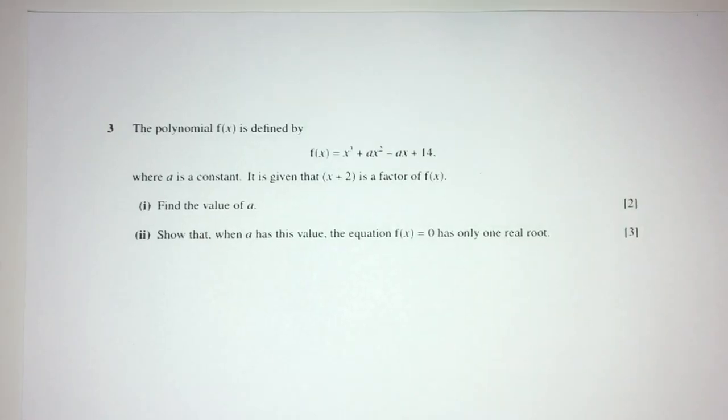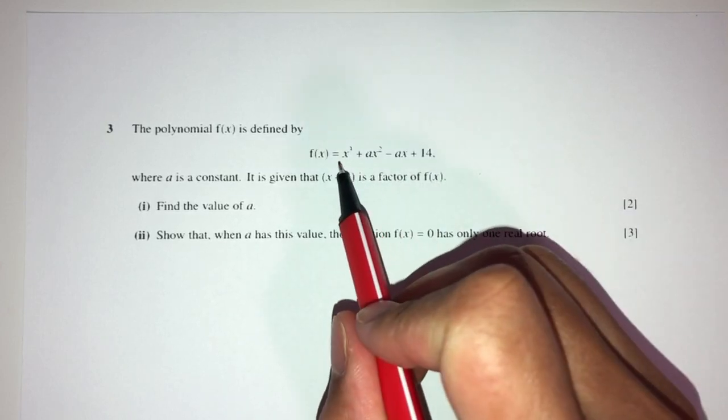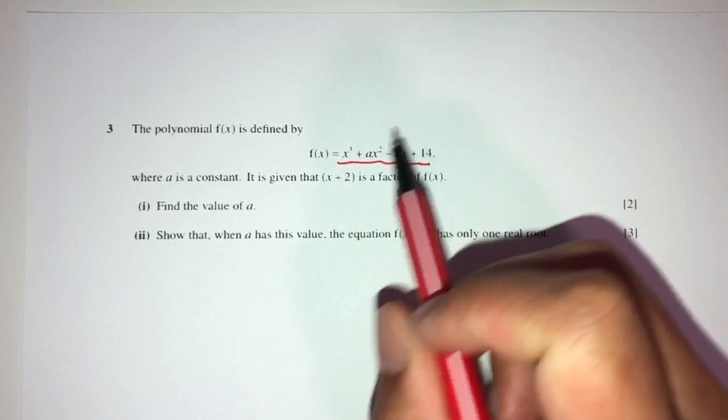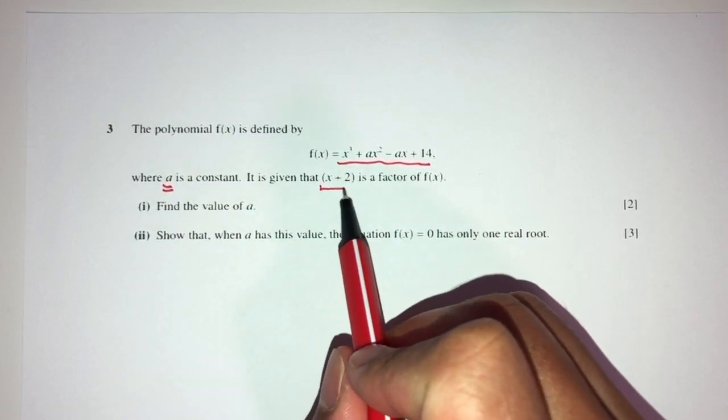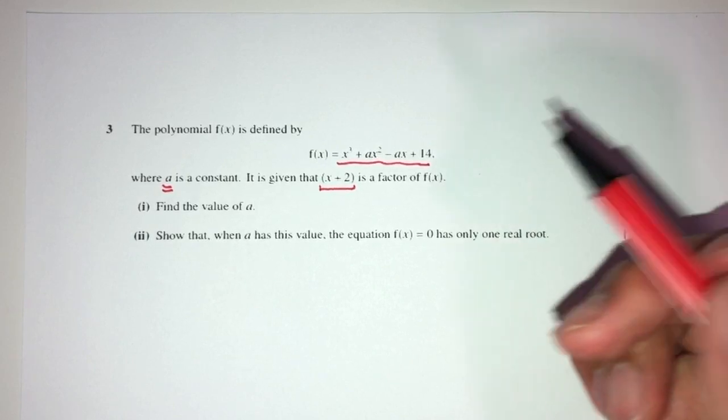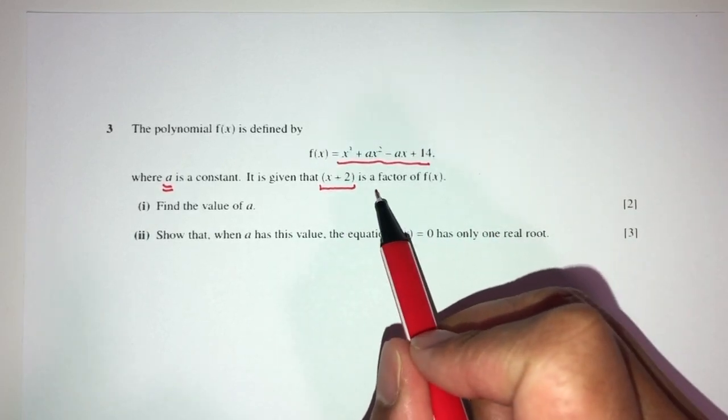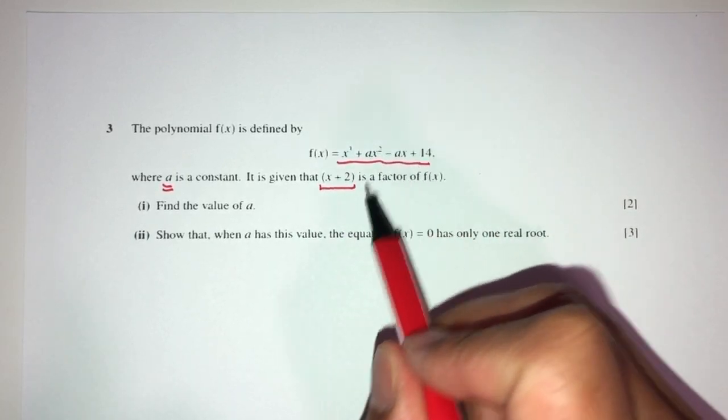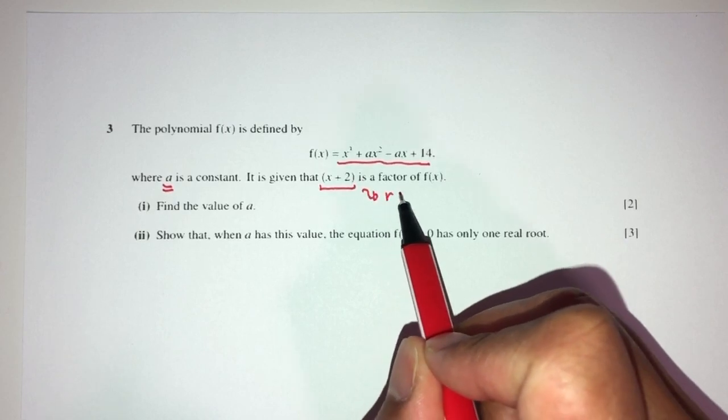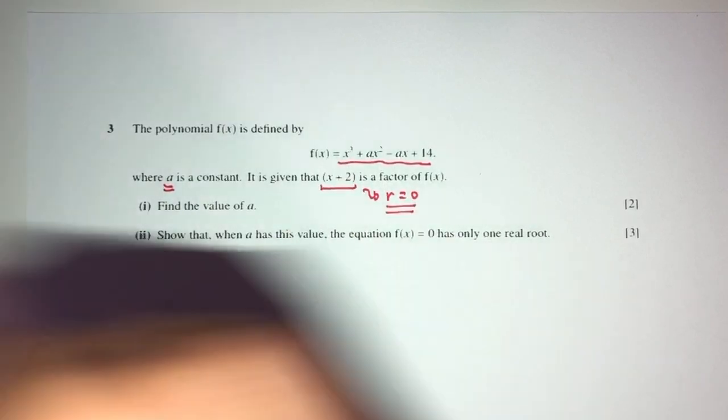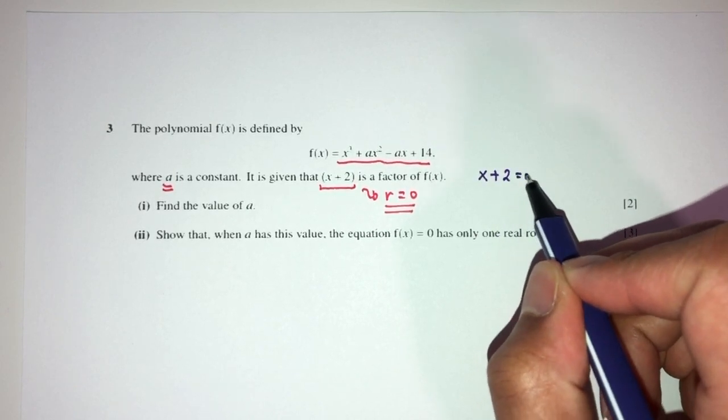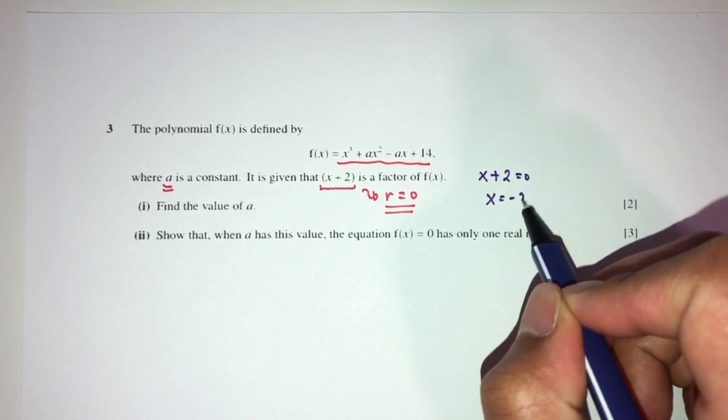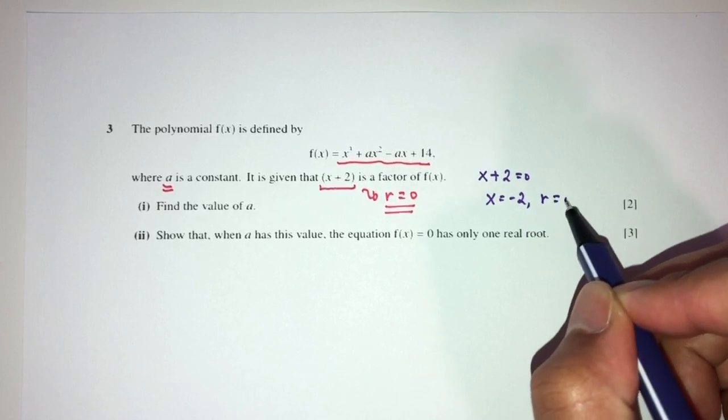Let's move on to question number 3. Here we have a polynomial f of x defined by this equation, where a is a constant. Given that x plus 2 is a factor. We have seen this question many times before. Whenever we have a factor, it means that your function divided by the factor, the remainder will be 0. For what value of x? We take the factor and equate to 0. It means when x equals minus 2, my remainder will be 0.